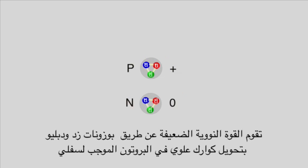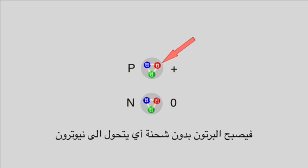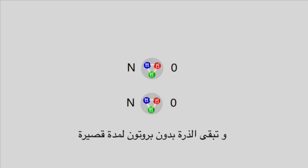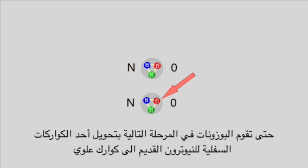The weak nuclear force transforms the upper quark into a lower quark in the proton. This is accomplished with the help of W and Z bosons, which in turn transforms the proton into a neutron. Therefore, the nucleus becomes a particle with no charge since it now contains two neutrons.